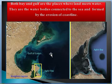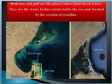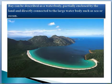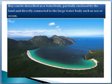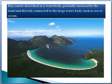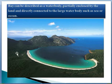A bay can be described as a water body partially enclosed by the land and directly connected to large water bodies such as a sea or ocean. As you can see here, the bay is partially enclosed by land and directly connected to the large ocean or sea.